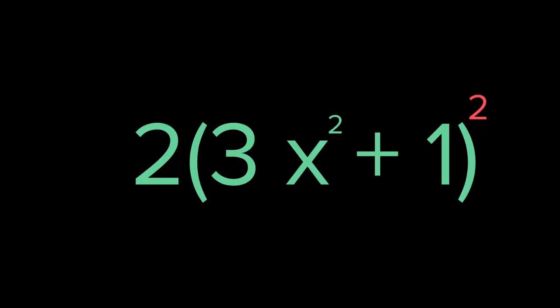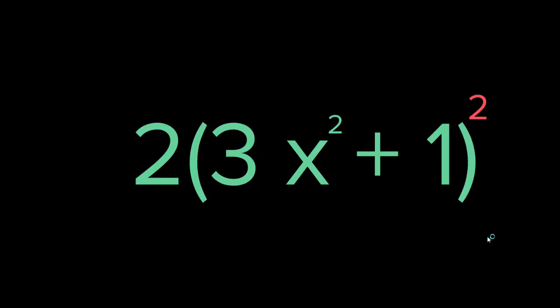What do I mean by that? If you look at this function, for example, we have 2 times (3x squared plus 1), everything squared. So everything in the bracket — 3x squared plus 1 — is squared. As you can see, we have two functions right here, and one of them is inside the other one.